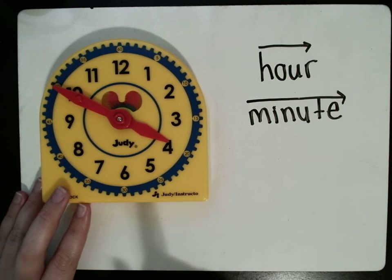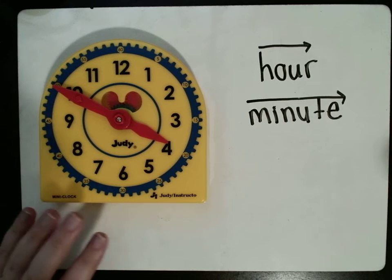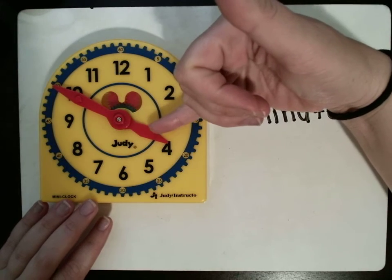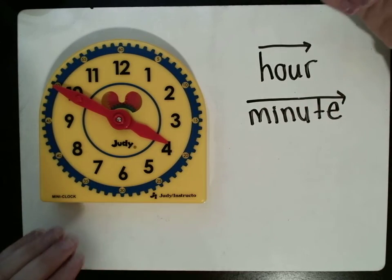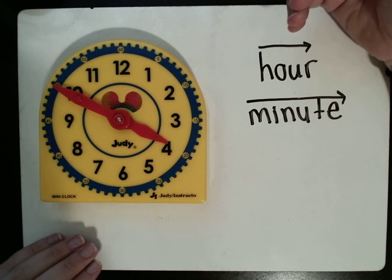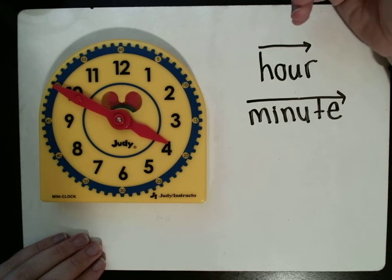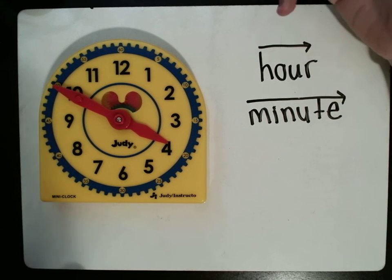Now, this is what starts to confuse a lot of students. This hour hand looks like it is on the 4. So, a lot of you are going to want to say, oh, it's 4:50. It's 4:50. But, that would not be correct.